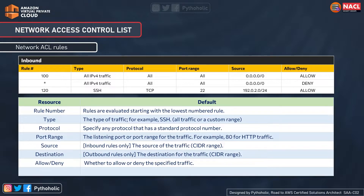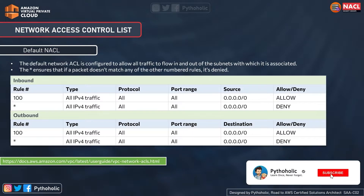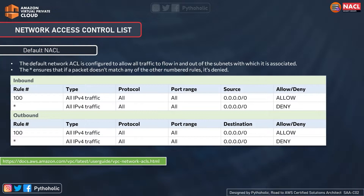Now let's check how the default rule looks. This is the default network ACL you get when you create a new one. Just like security groups, we have inbound and outbound rules. Network ACL acts as a firewall for your subnets, while security groups are for your instances. By default, the network ACL is configured to allow all traffic to flow in and out. Rule number 100 allows all traffic for all protocols and port ranges from source 0.0.0.0/0, covering all IPv4 addresses.